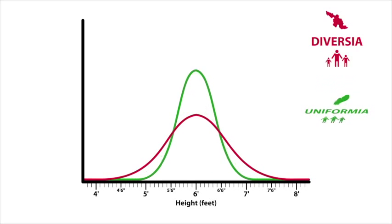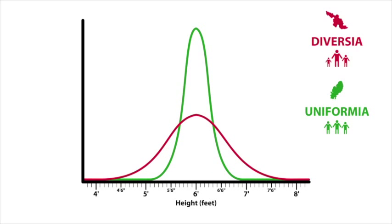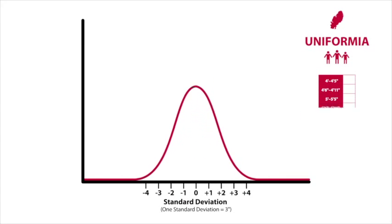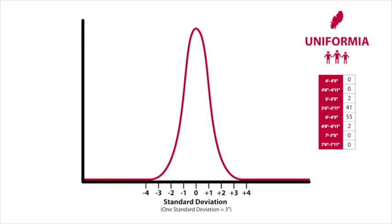When we compare the distribution curves of the two countries, the difference is immediately apparent. This difference is also reflected in the standard deviation for each country. For Uniformia, since the data points are very close to the mean or average, this is referred to as a low standard deviation.